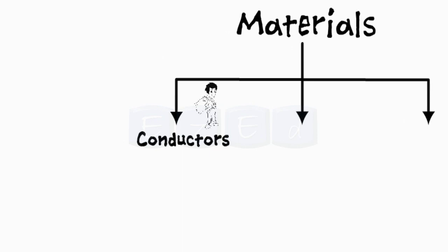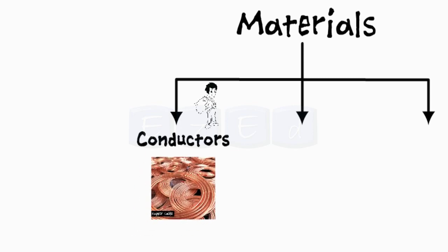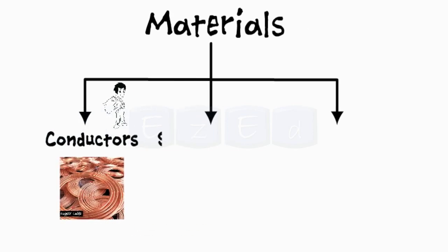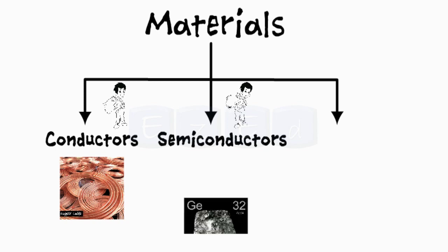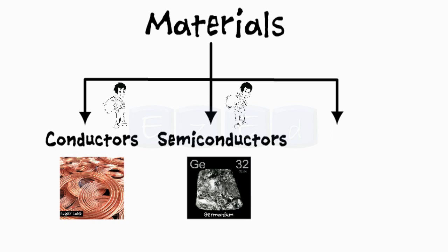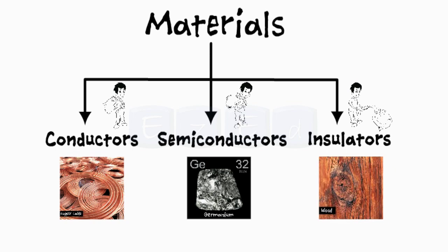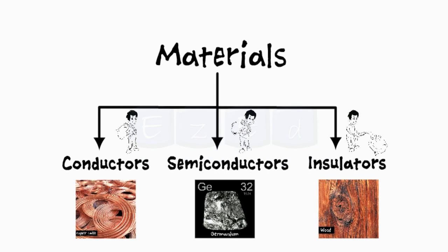Conductors are materials that have excellent current carrying capacity or allow good flow of current through them, such as a copper wire. Semiconductors, as the name suggests, allow partial or semi-conduction of the current — their current carrying capacity is in between the conductor and the insulator, such as germanium. Whereas insulators are materials that are bad conductors of current and do not allow the flow of current through them, as they do not have a current carrying capacity, such as wood.